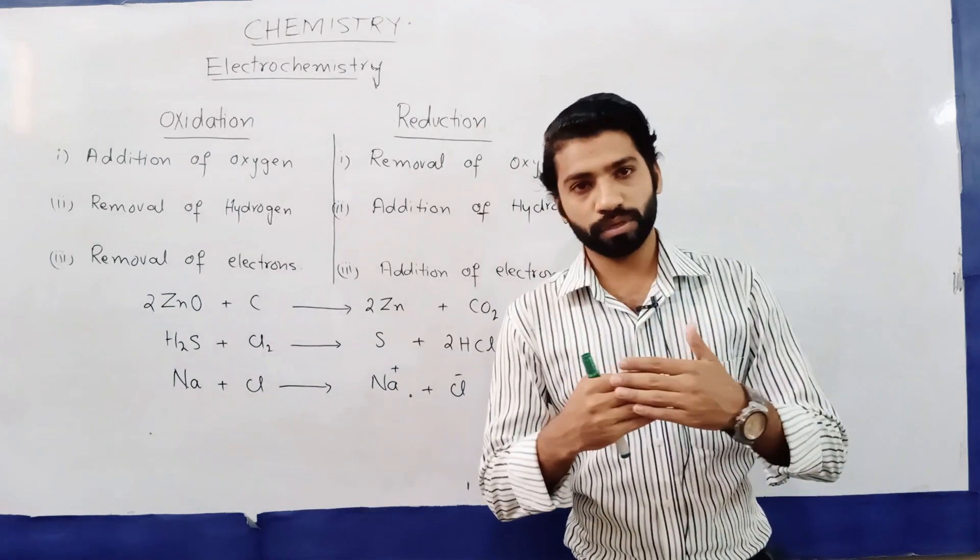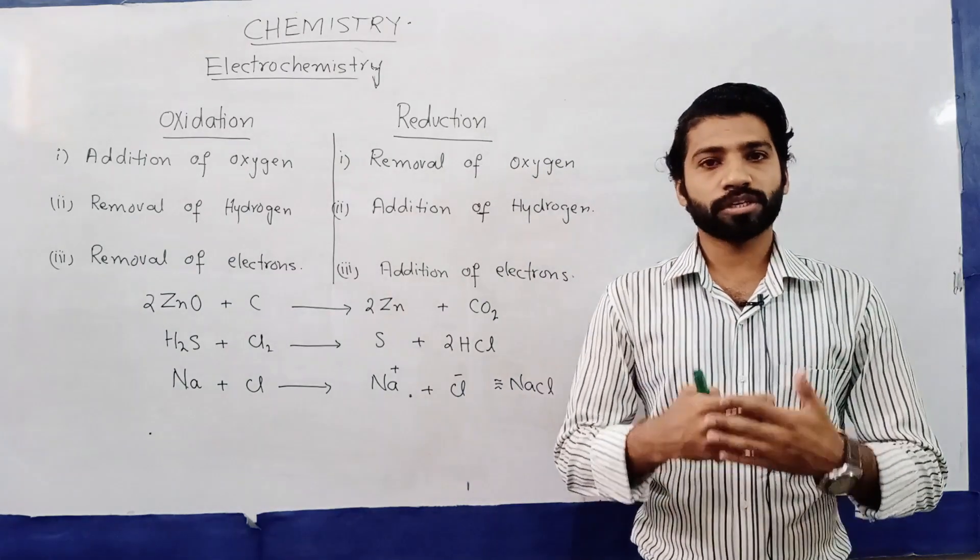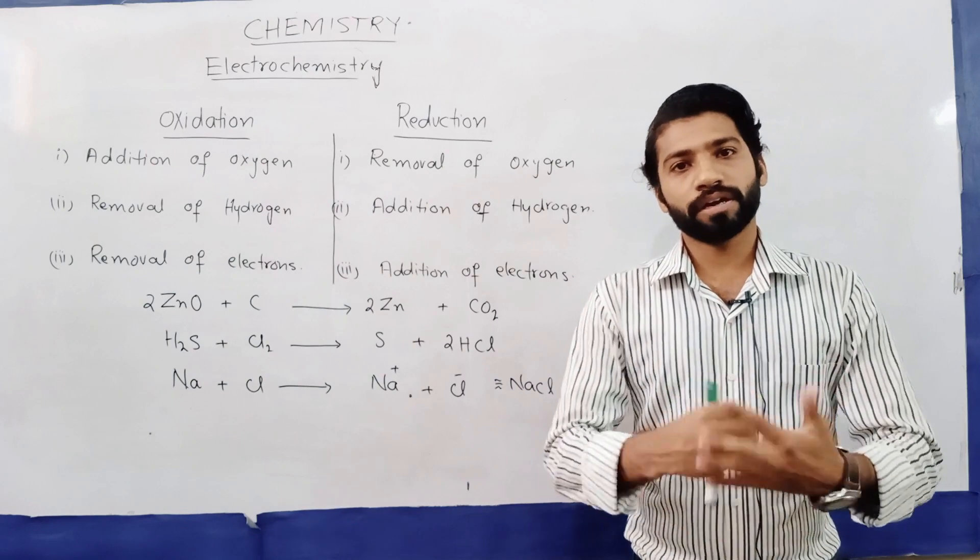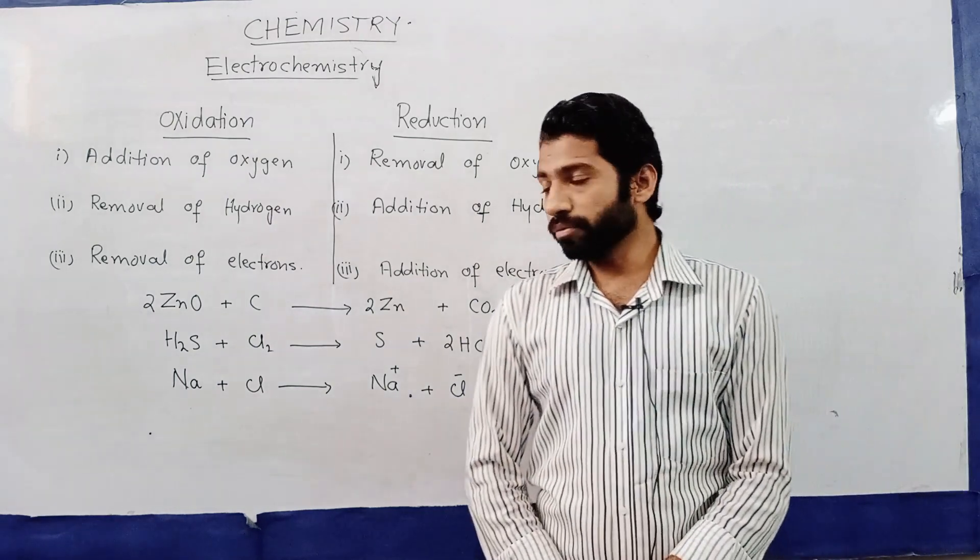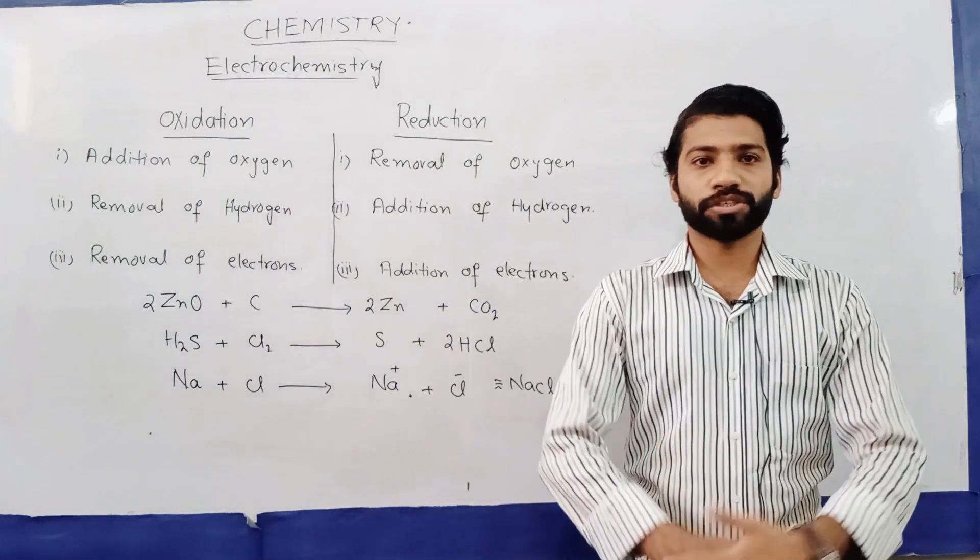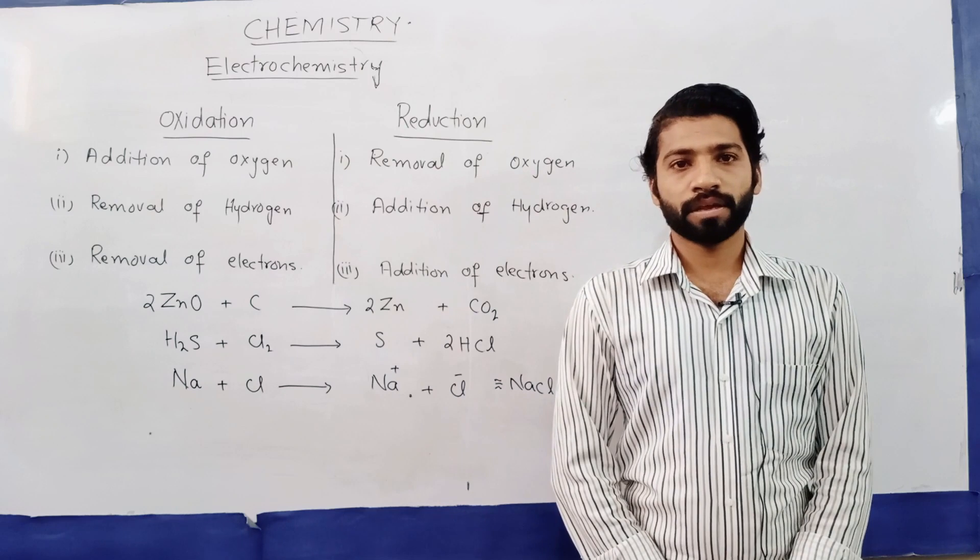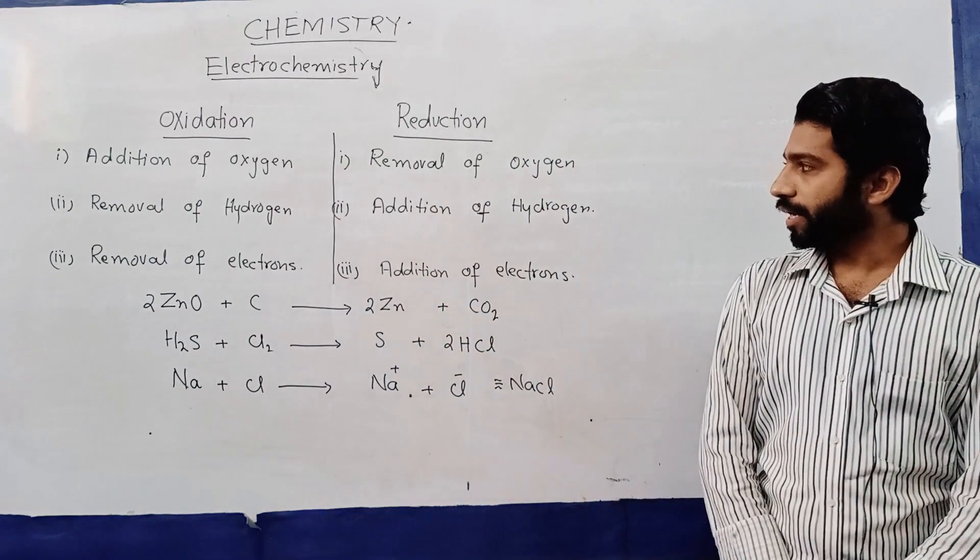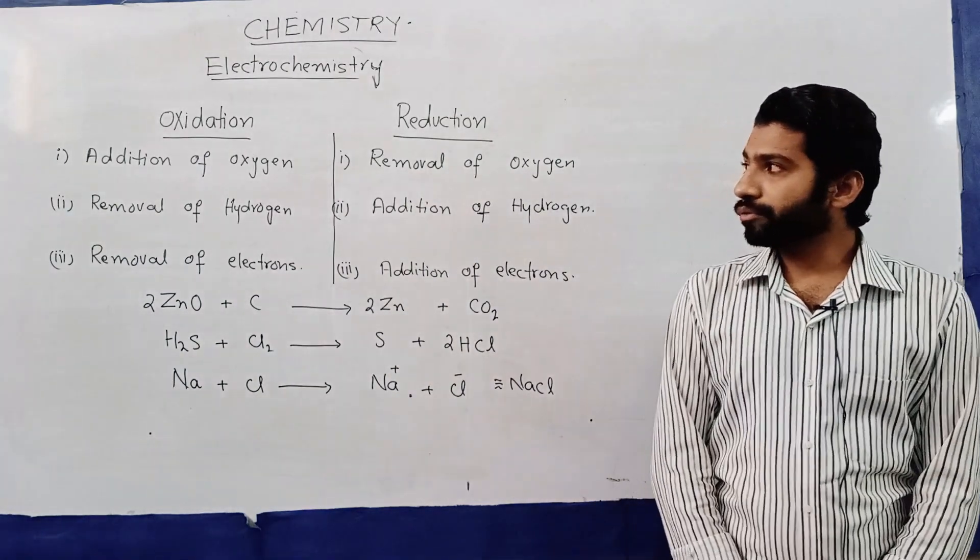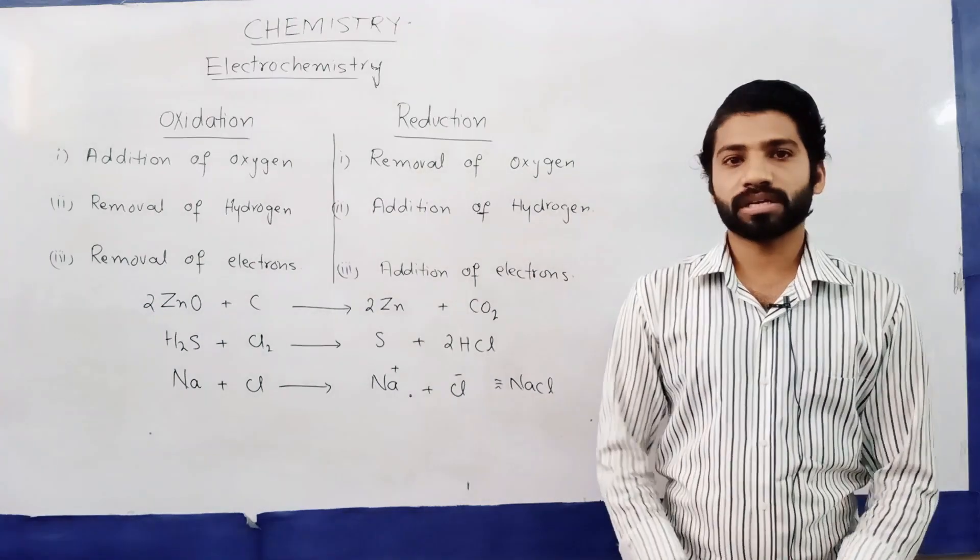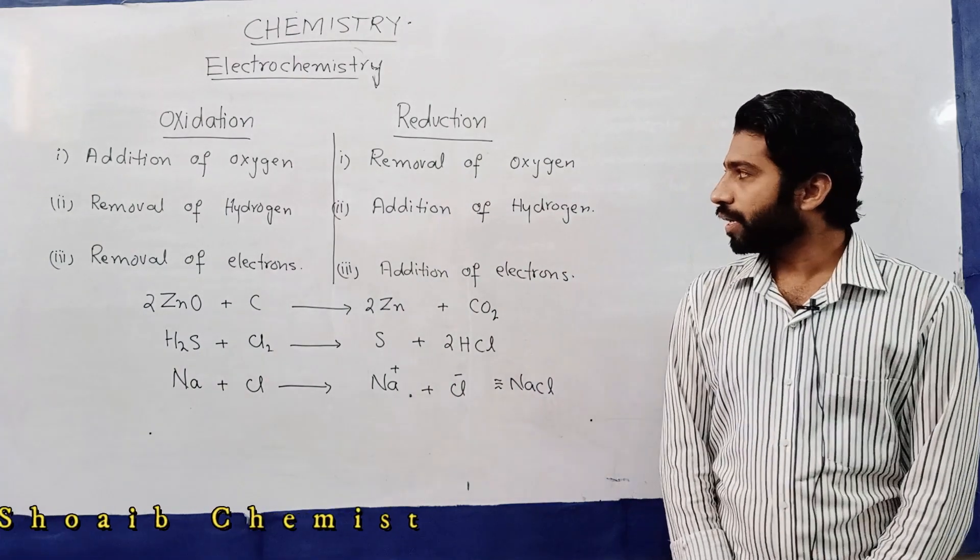Similarly, removal of hydrogen from a substance is known as oxidation, and addition of hydrogen to a substance is called reduction. So we can say that addition of oxygen and removal of oxygen from a substance can respectively be called oxidation and reduction steps. Similarly, removal of hydrogen and addition of hydrogen from a substance is called oxidation and reduction respectively.